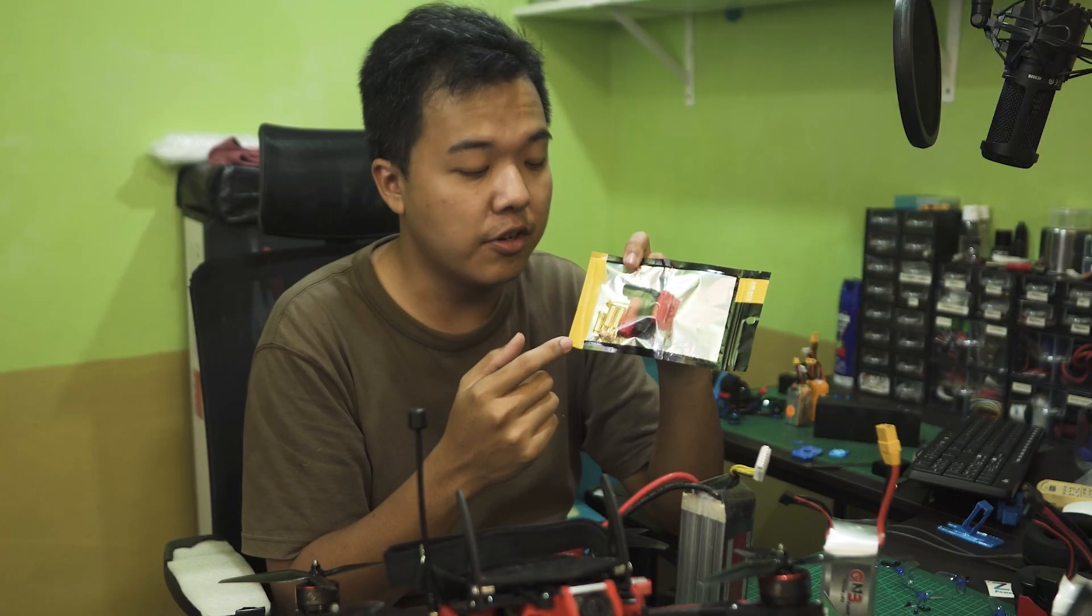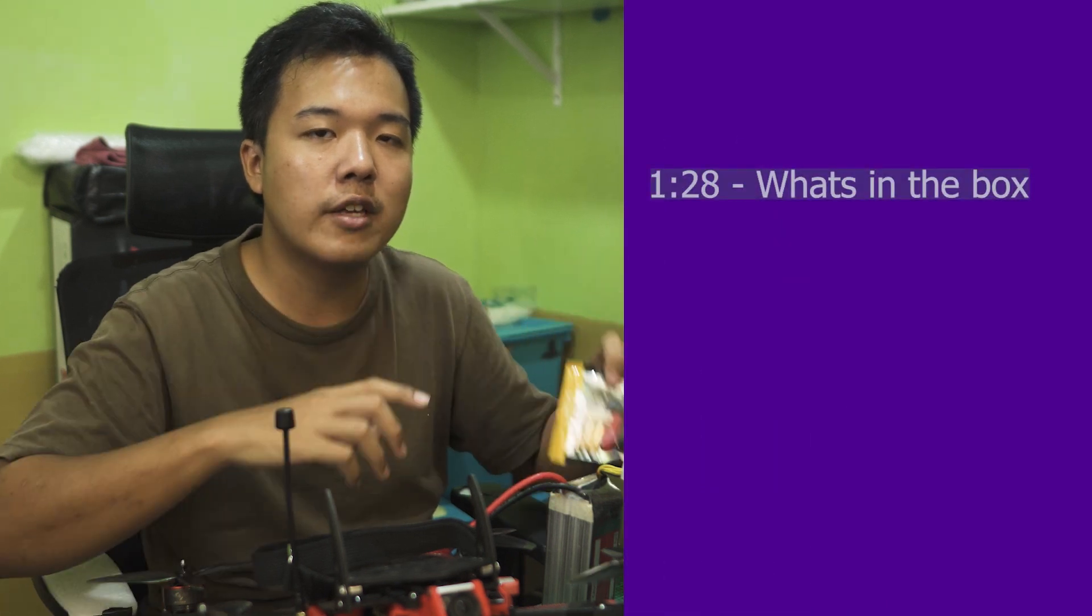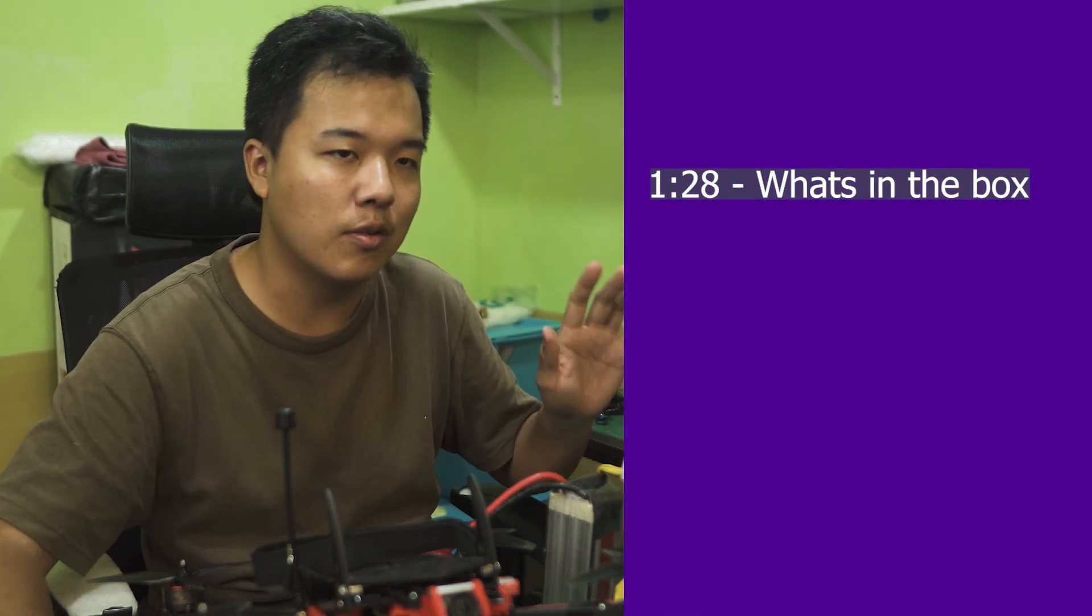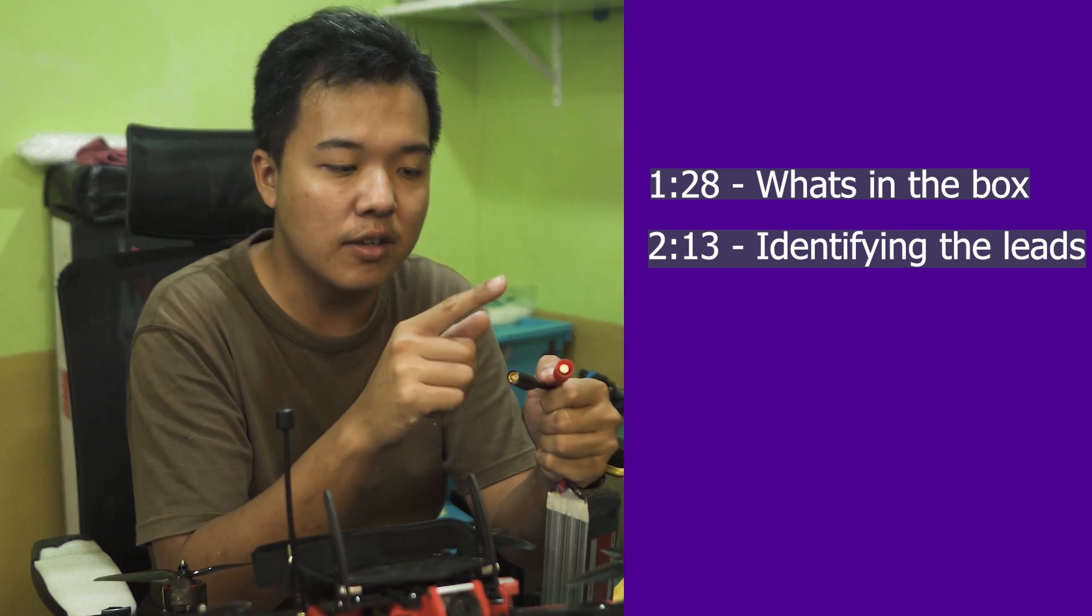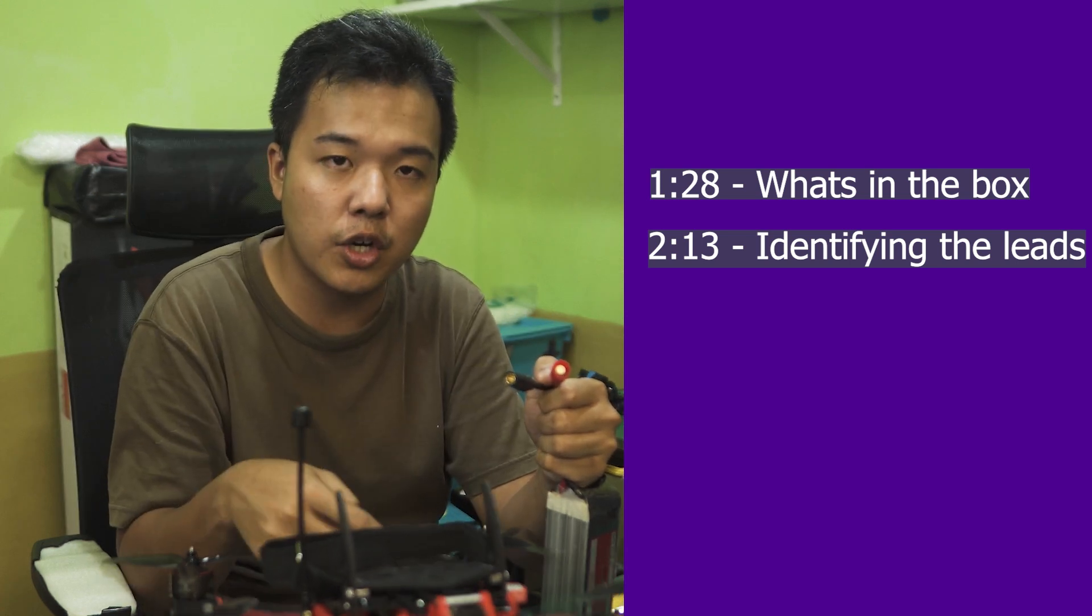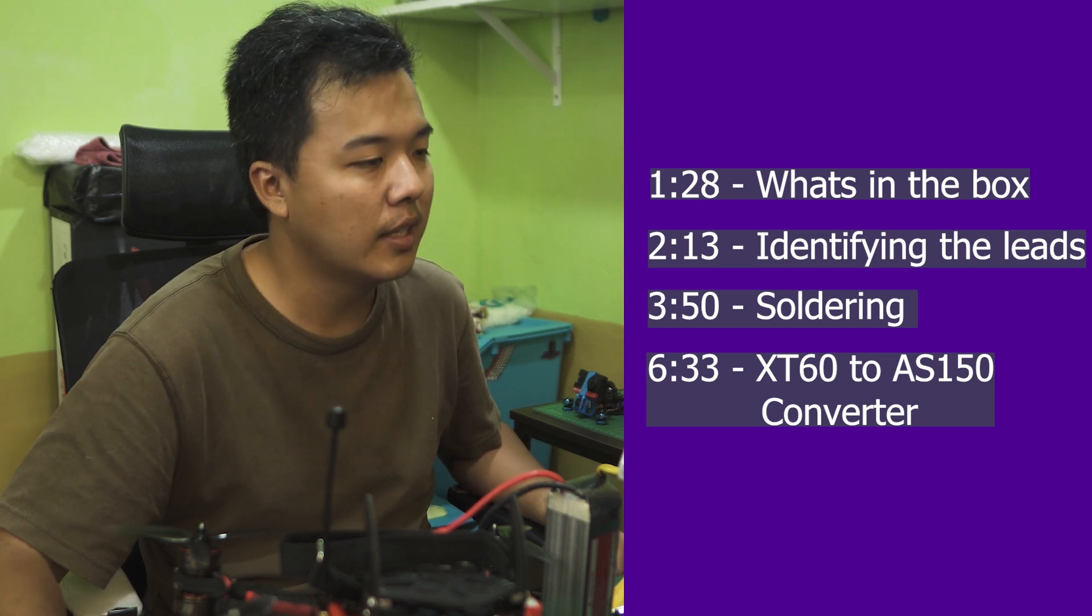Now, almost all of these pieces are unique, except for two of the bullet connectors. So I'll run you guys through the product page on what piece is what piece. And after we identify that, we're going to decide which of the leads go onto the battery and which ones on the ESC. And I'll run you guys through the soldering process as well. Let's head into it.